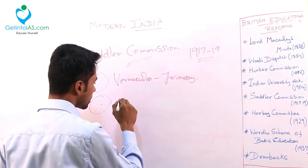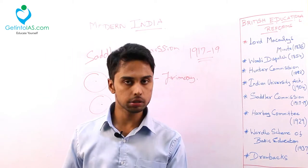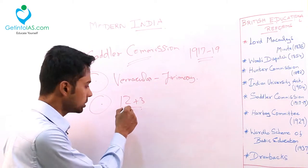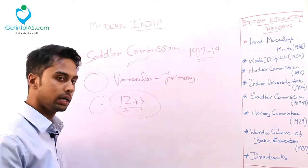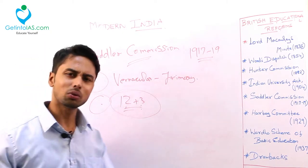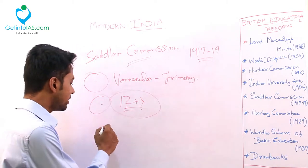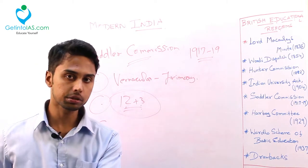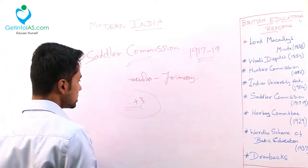For secondary level, Sadler Commission gave the 12 plus 3 formula. Before entering university, the student should complete a 3-year degree course. Up to standard 12 you study, then a 3-year degree course, then university - this system was given by the Sadler Commission only. Also, female and scientific education were promoted by this Sadler Commission. The main mandate was to regulate Calcutta University's management, but he gave recommendations for primary and secondary levels. Remember: 12 plus 3 is the Sadler Commission.